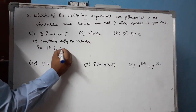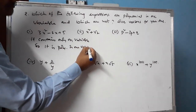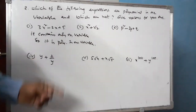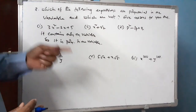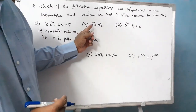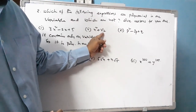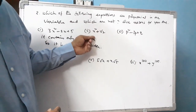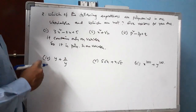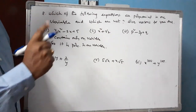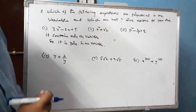Second expression: x squared plus root 2. The coefficients 1 and root 2 are real numbers, and the power of x is 2, which is a non-negative integer. It contains only one variable, so it is a polynomial in one variable.